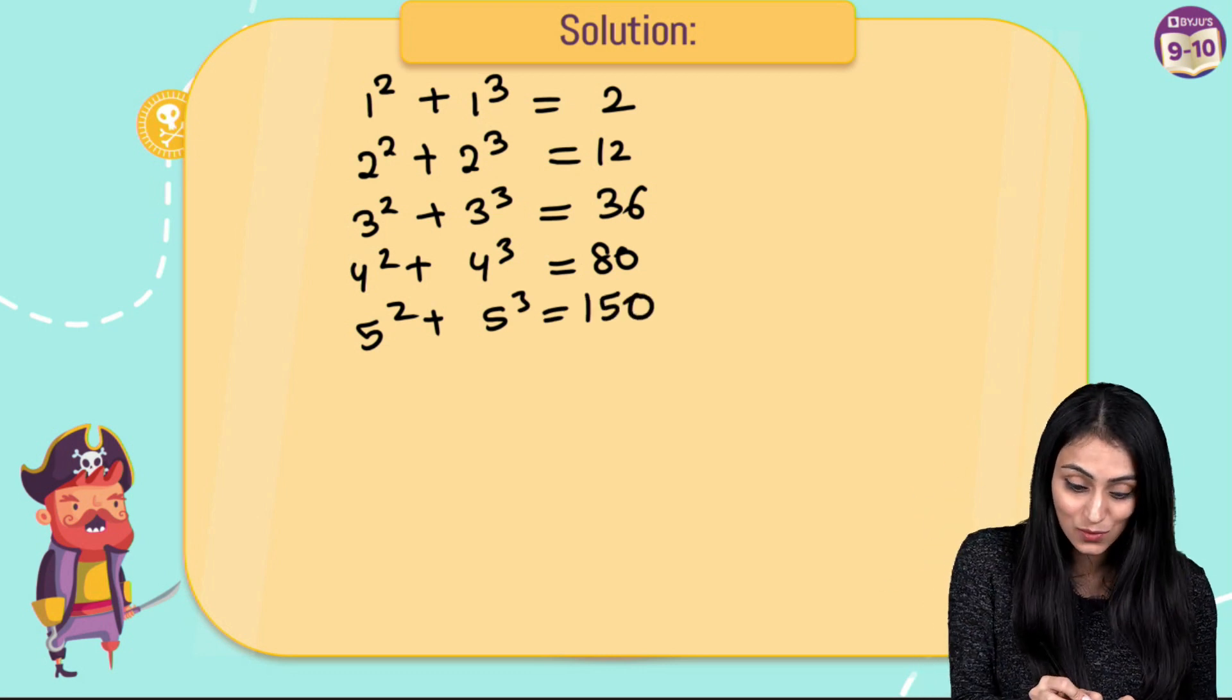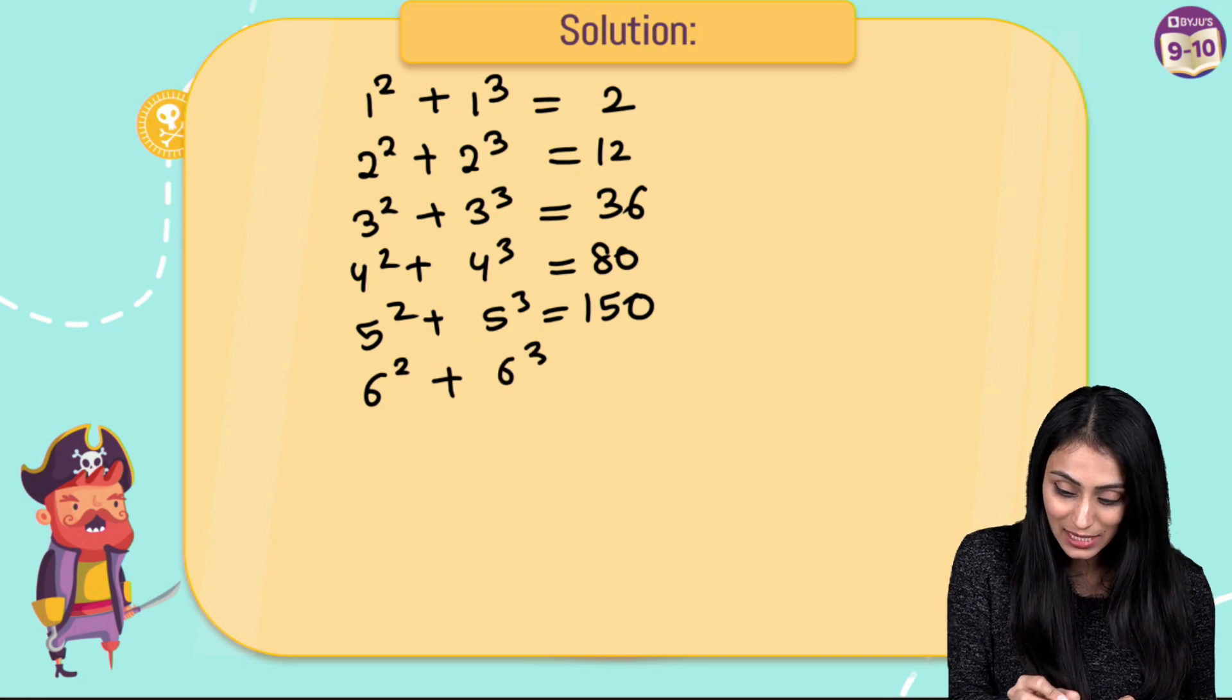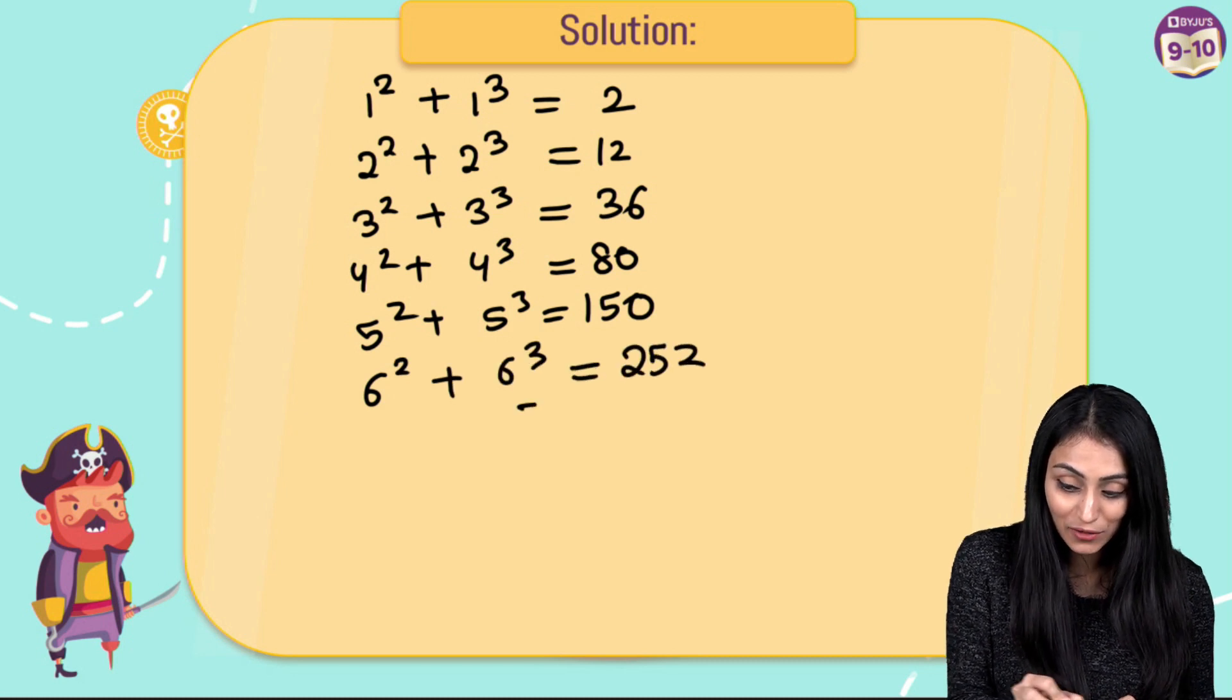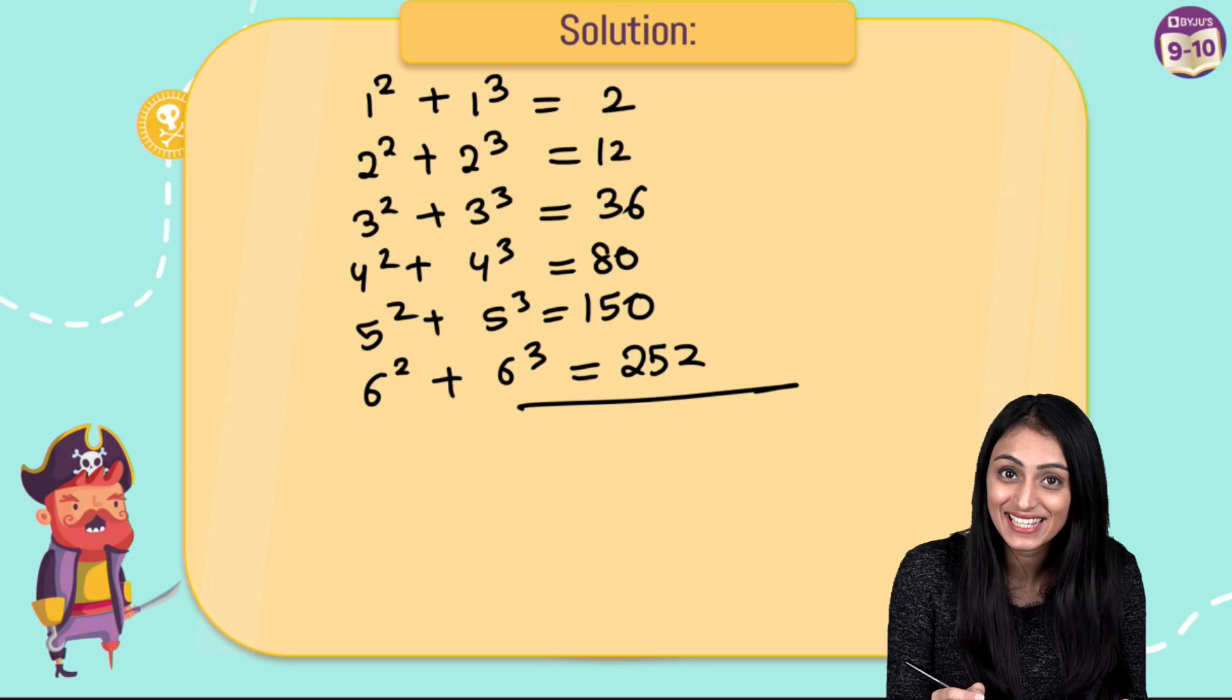Similarly, the next term in this case would be 6 square plus 6 cube, that would be 252, which is option D in this case.